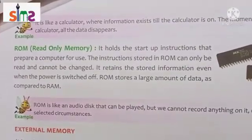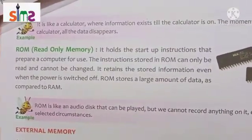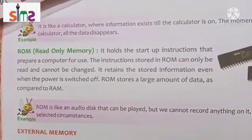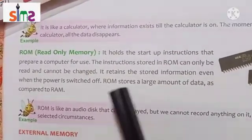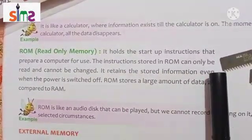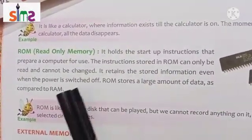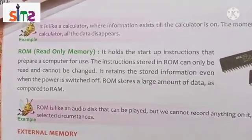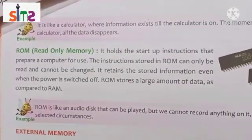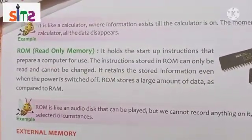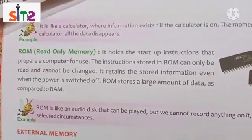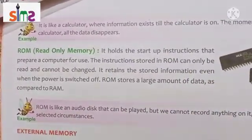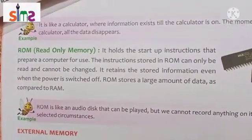The information stored in ROM is permanent — unlike RAM, where data is erased when the computer is turned off, ROM retains its data. ROM stores a large amount of data as compared to RAM.